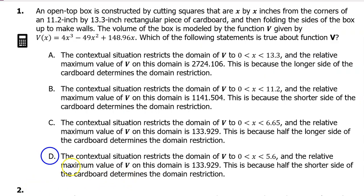Based on that alone, we know the answer will be D. The contextual situation restricts the domain of v to x is between 0 and 5.6. What about this part that says the relative maximum value of v on this domain is 133.929? Even though we didn't need it to answer this question, we might need information like this to answer a future question. So let's follow through and use our graphing calculator to find this relative maximum. This problem is calculator active.